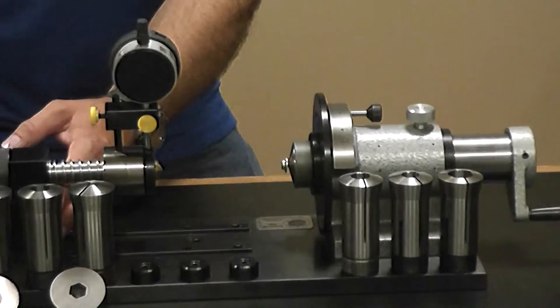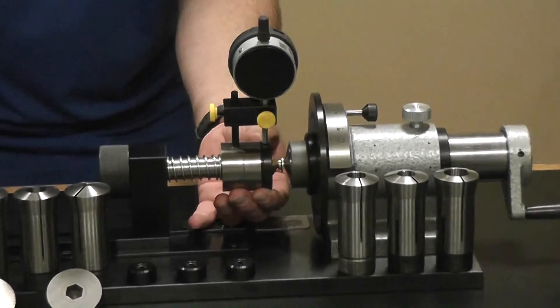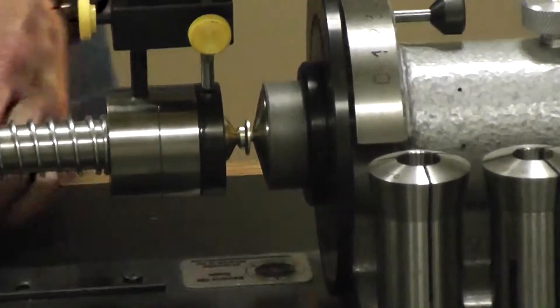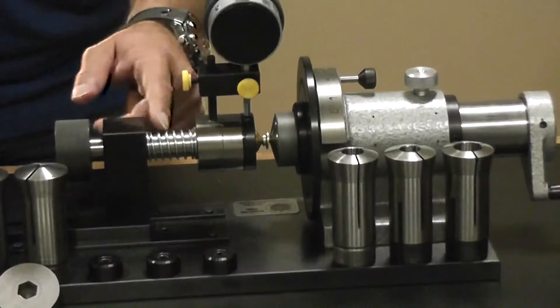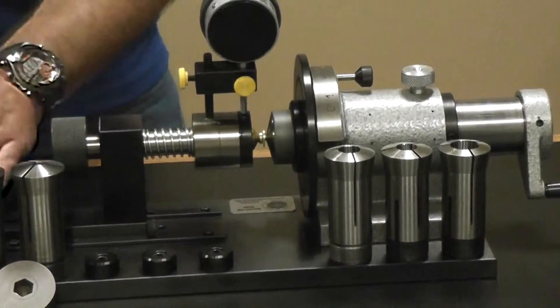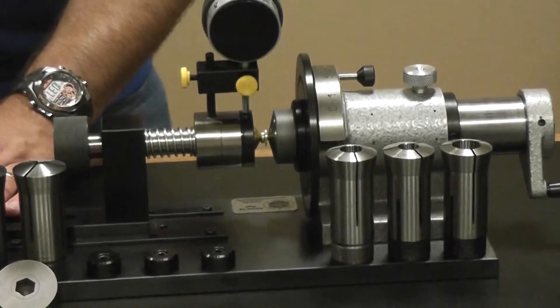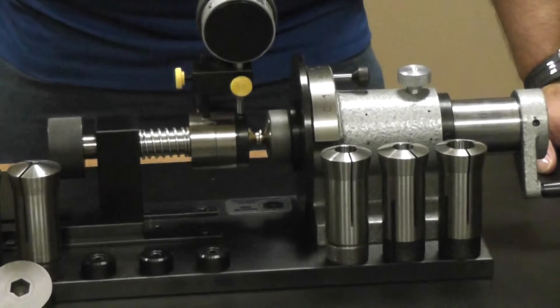We move our tail stock into position and we center the cone in our recess. We place a little bit more pressure on it so that we have our spring is actually forcing the cone into the recess and we tighten our thumb screw down to hold it all into position.